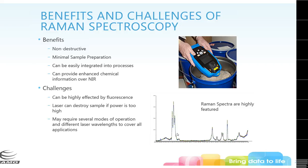The challenges are that Raman can be highly affected by fluorescence. If any part of your sample fluoresces or you don't use the proper wavelength, you'll see a very strange baseline — your features are still there but underneath or on top of a difficult-to-identify baseline. The laser itself can destroy the sample if its power is too high, so you have to be careful about focus and laser strength. Because of these two things, you may require several modes of operation or different wavelengths, and a lot of Raman spectrometers have a tunable laser to get around the fluorescence issue.